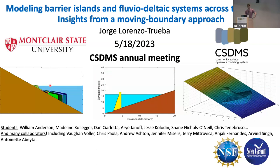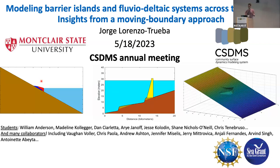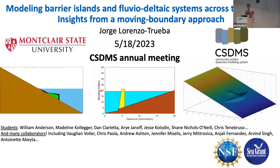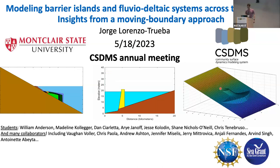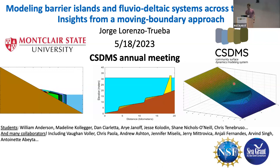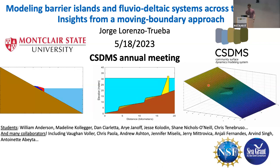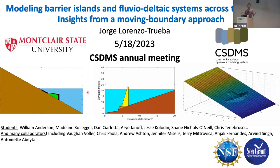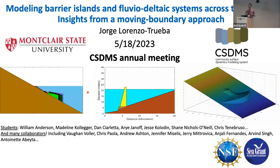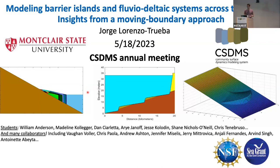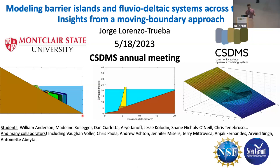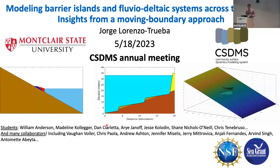Here you see a few examples on the left: a fluvial deltaic environment and continental shelf evolving under sea level cycles. In the center, you see a barrier island migrating towards land under constant sea level rise. What all these simulations have in common is what we call a moving boundary approach, which combines idealized geometry with sediment conservation or mass balance. This is the product of a lot of effort from students and many collaborators.